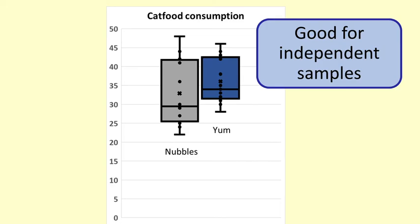When we are comparing two independent samples we should plot the data using box-and-whisker plots. Here are the plots for the cat food example with independent samples. We can also use box-and-whisker plots for paired samples, and sometimes this is better than nothing, but it disregards the information gained from pairing and reduces the power of our test.